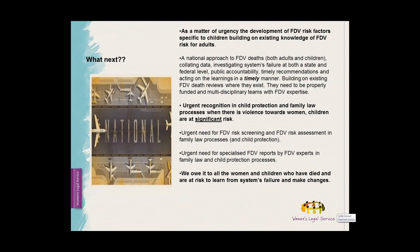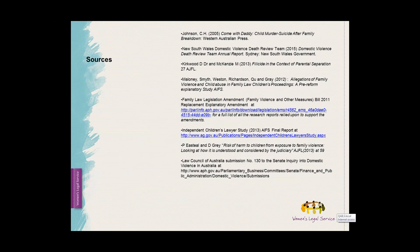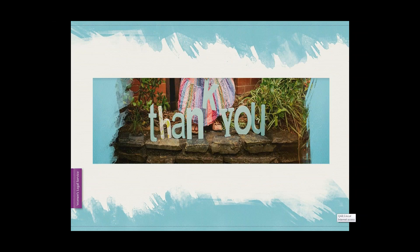In relation to systemic issues, what we are asking for is, as a matter of urgency, the development of specific risk factors specific to children, building on existing knowledge of domestic violence risk for adults. We're asking for a national approach to domestic violence deaths, urgent recognition in child protection and family law that where there's violence towards women, children are at significant risk, and obviously really appropriate and specialised domestic violence risk screening and risk assessments across the legal system.